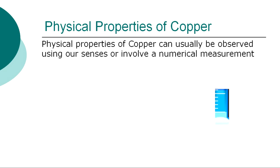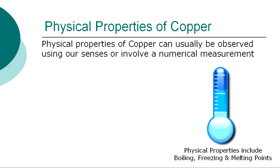The more specific physical properties of copper can usually be observed using our senses, or involve a numerical measurement, such as determining its boiling, freezing, and melting points. The physical properties of copper are listed below.